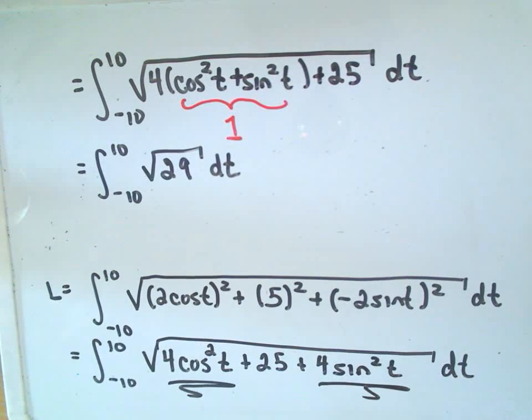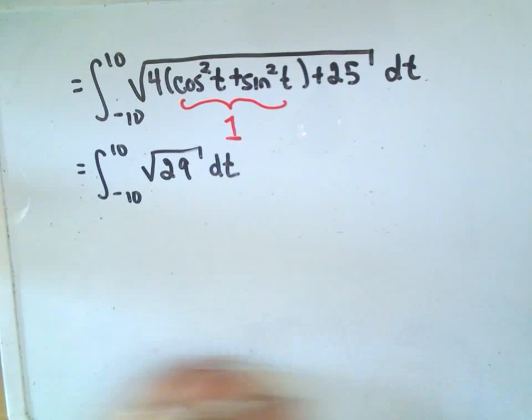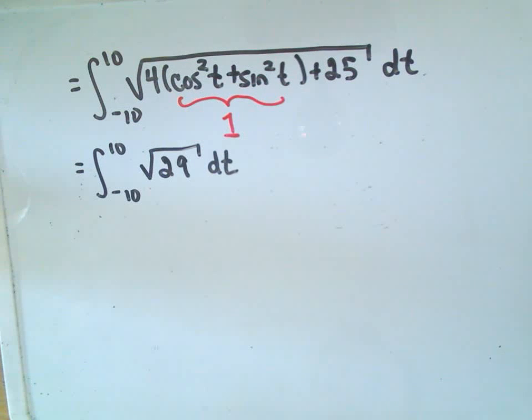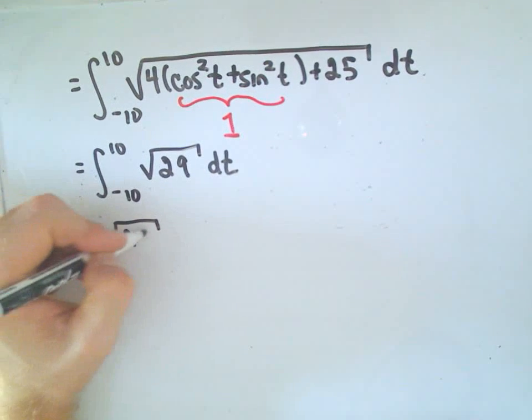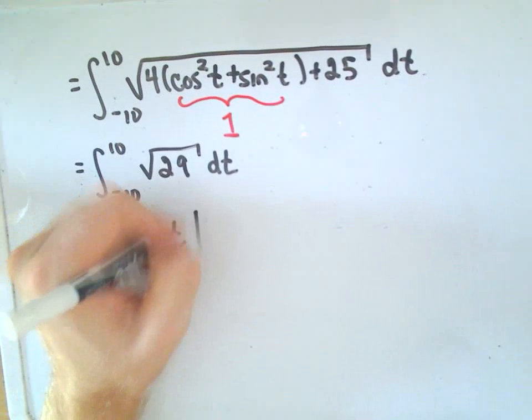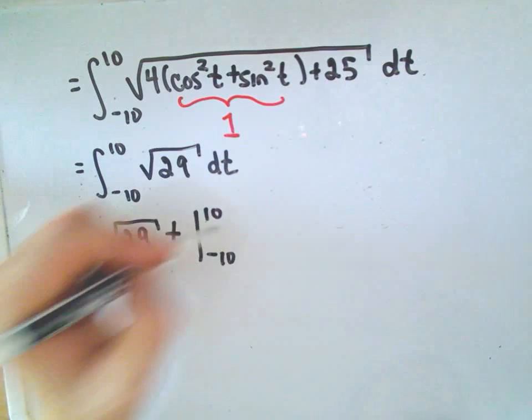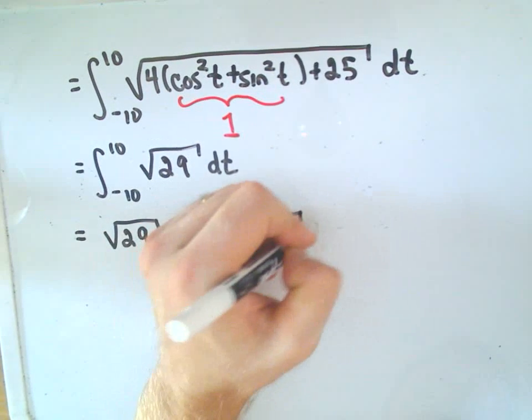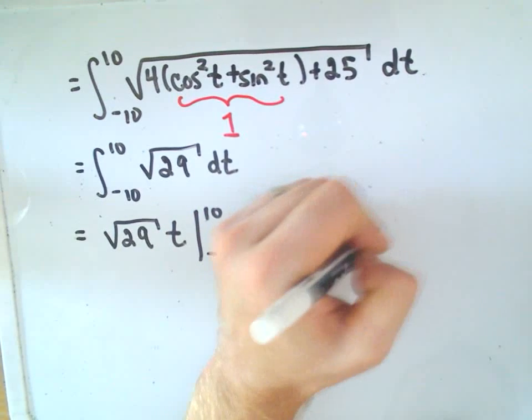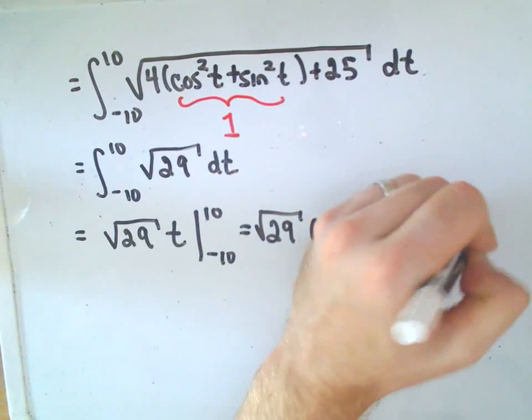In calc 3, integrals don't get much better than that. Nothing too bad here. If we integrate this constant, we'll simply get the square root of 29 times t, evaluated from negative 10 to 10. We'll get square root of 29 times 10, minus the square root of 29 times negative 10.